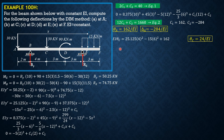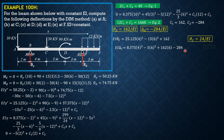Then delta C, with X equals 6: EI delta C equals 8.375(4) cubed minus 5(6) cubed plus 162 times 6 plus C sub 2 which is negative 284. So delta C equals 144/EI.